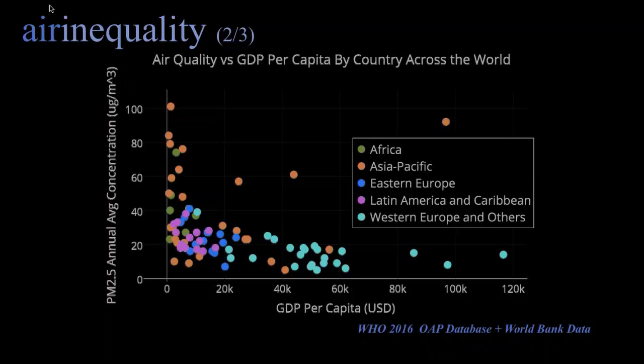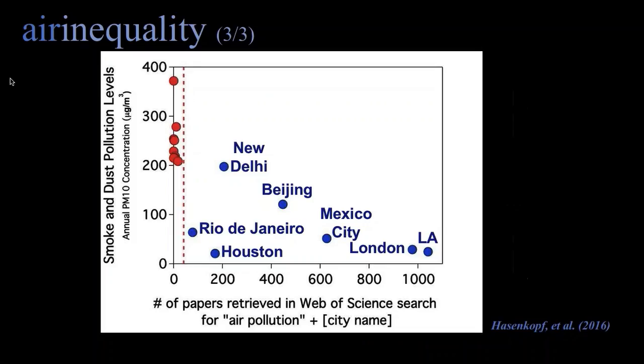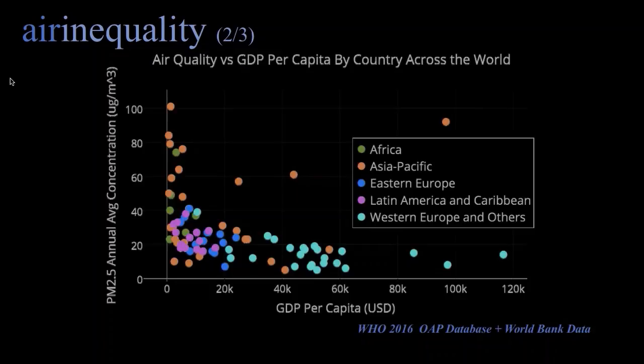If you're curious about the outliers — those orange dots that are above the curve — those are Qatar, Bahrain, and UAE.